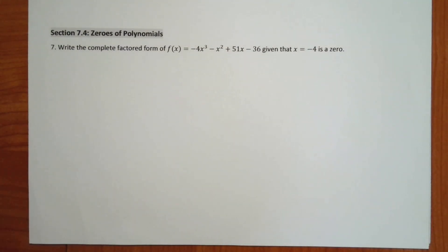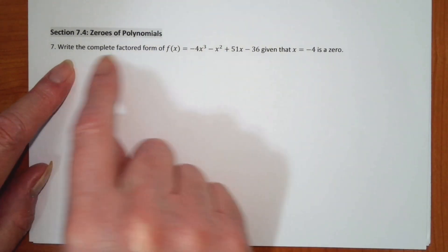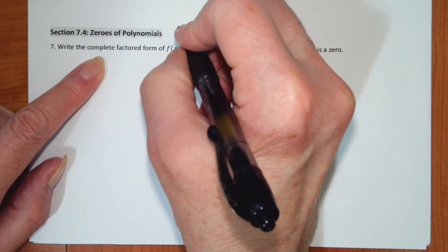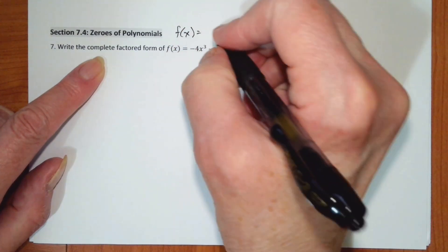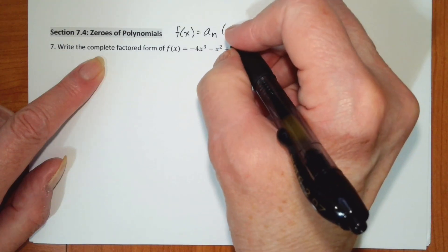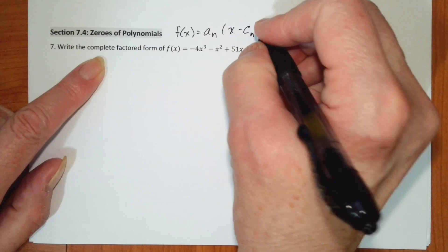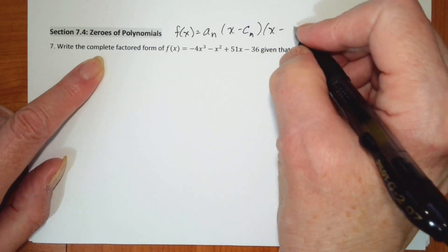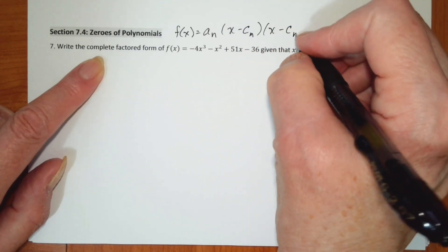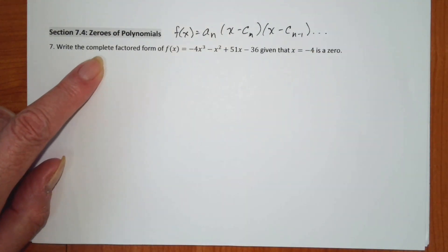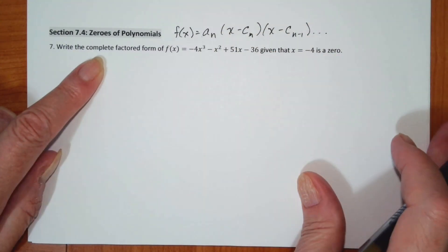Let's look at 7.4 and find some zeros of polynomials. We want to write the complete factored form. The complete factored form is f of x equals a sub n times x minus c1 times x minus cn, and on and on. So we have to find all the linear factors. That's the completely factored form, and this is what we may not have done before.